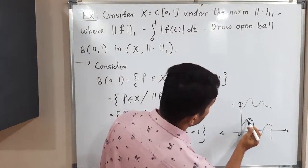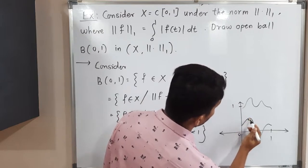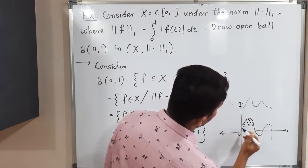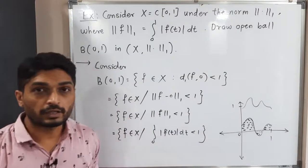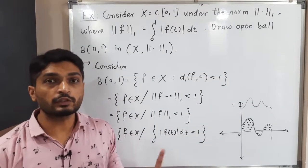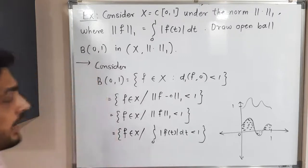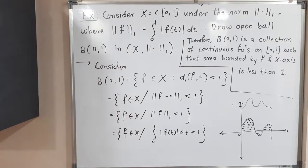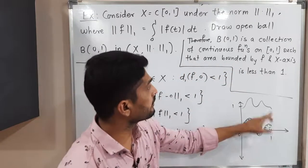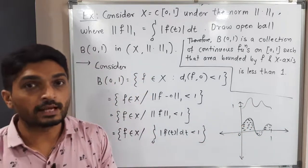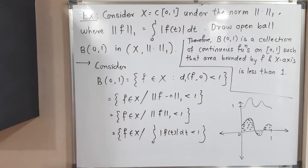By solving the integration we get the area of this region. The area of this region must be less than 1, then that function will be a member of this open ball. As shown in the diagram, the open ball is the collection of all continuous functions defined on [0,1] such that the area bounded by F and the x-axis is less than 1 — then we can say that F is a member of that open ball.